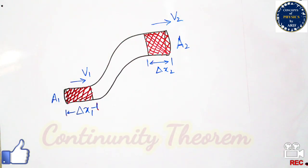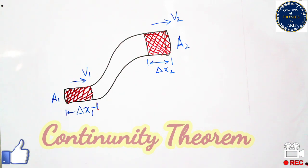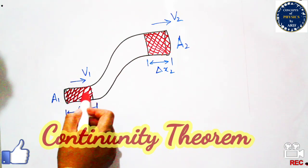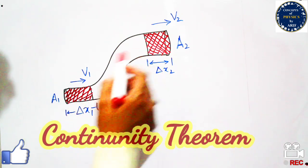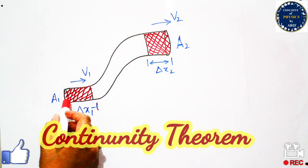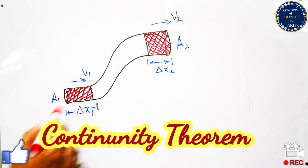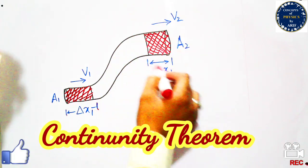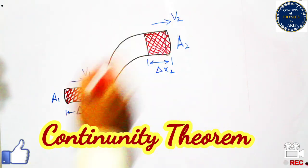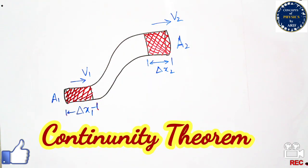Hi guys, welcome to my YouTube channel. In this video we will briefly discuss the equation of continuity. We will consider a pipe having an irregular shape in which the initial point is very narrow and the final area is very wide.